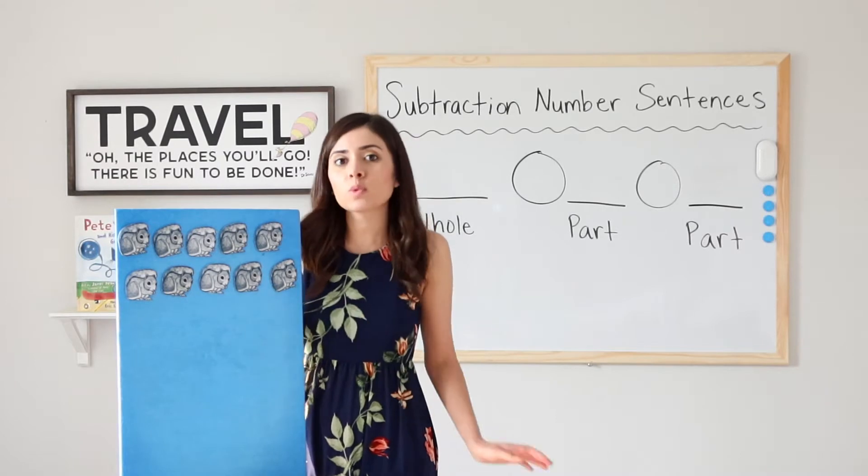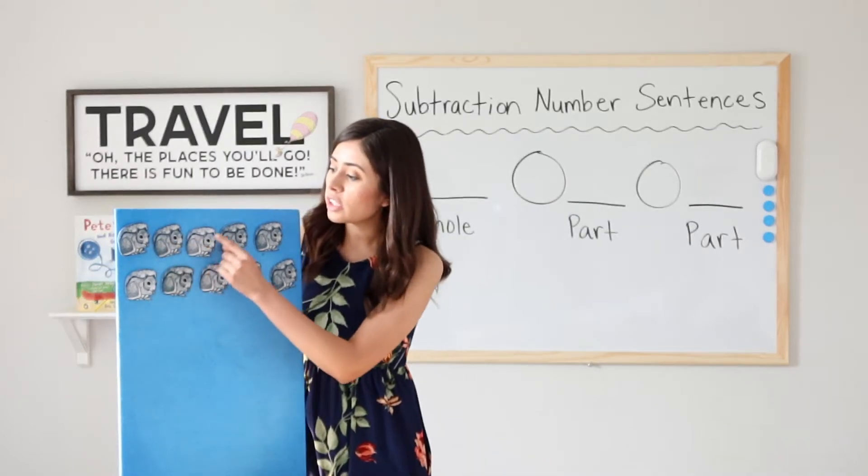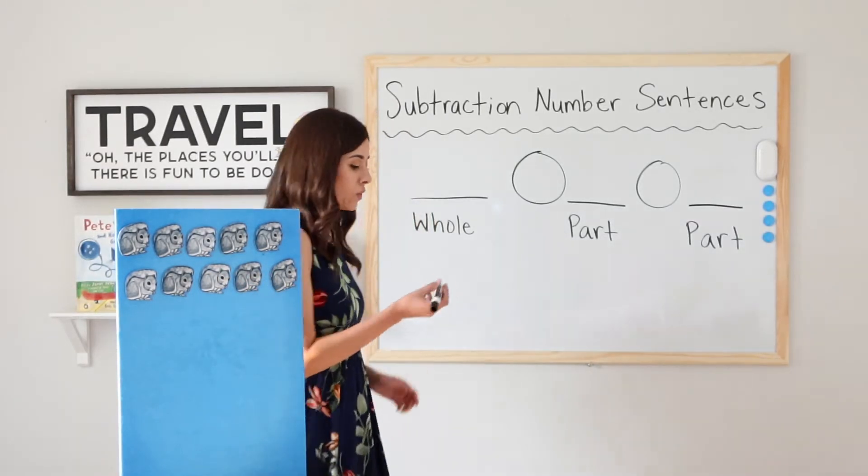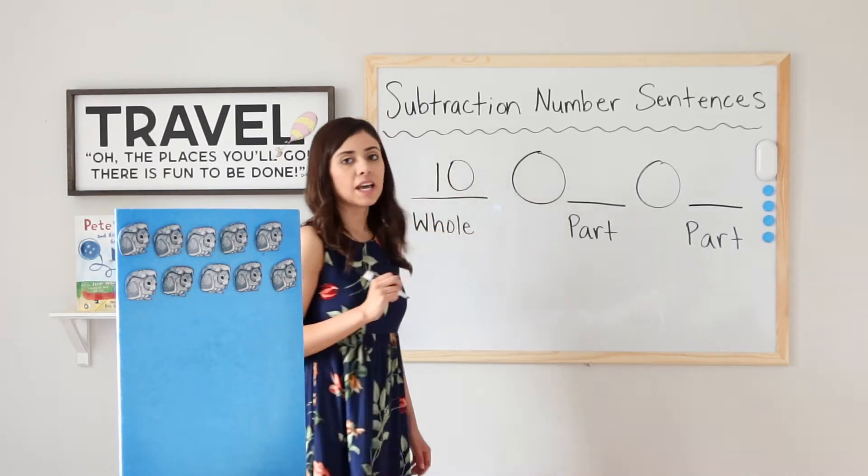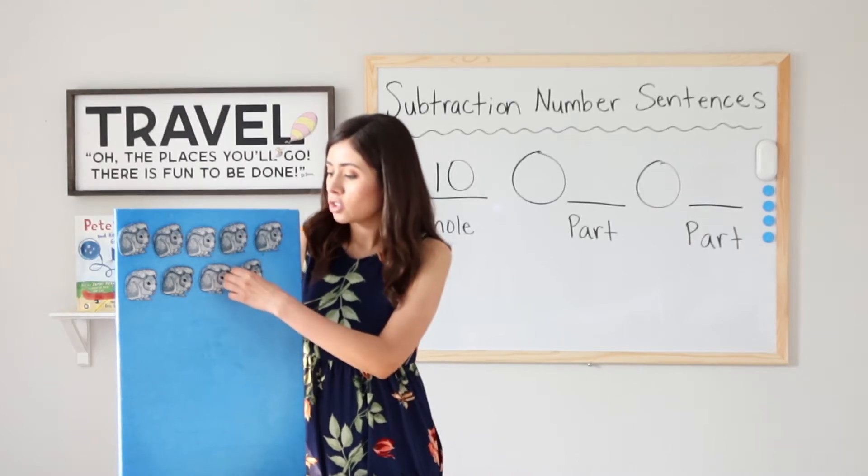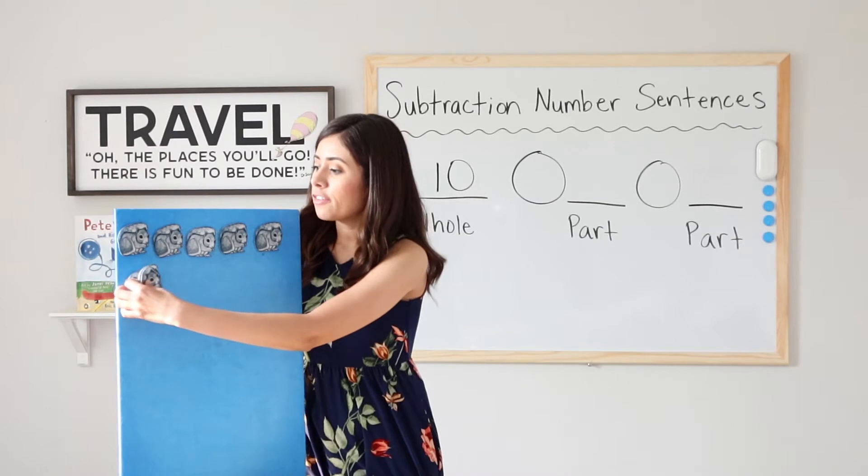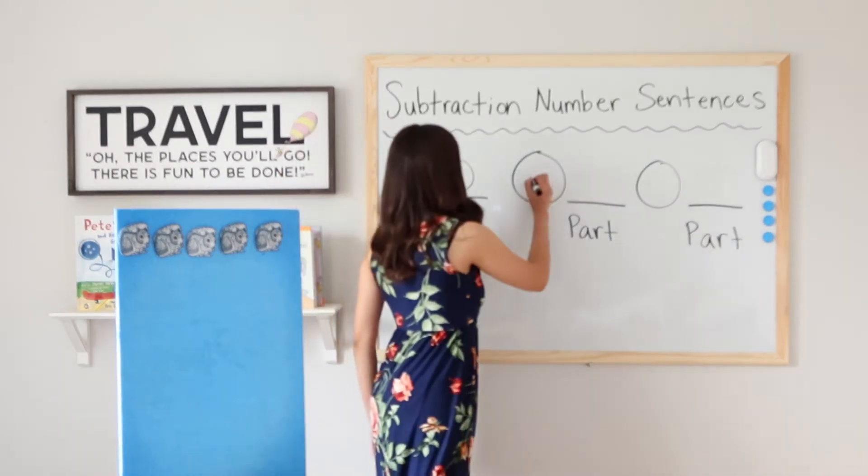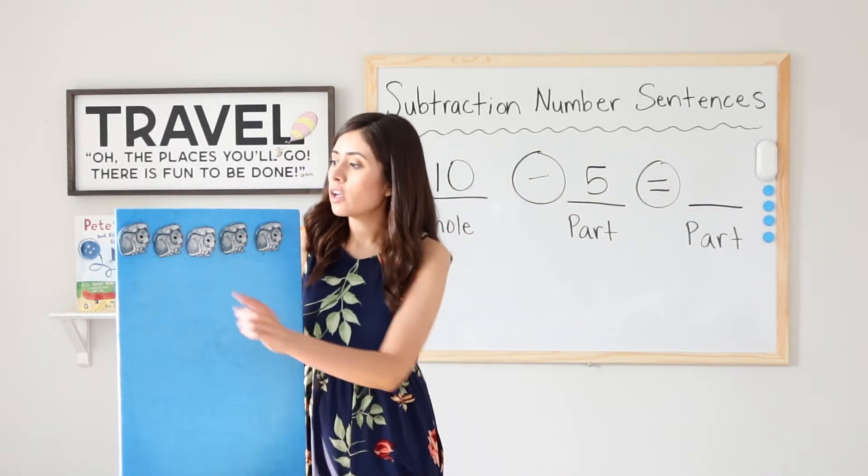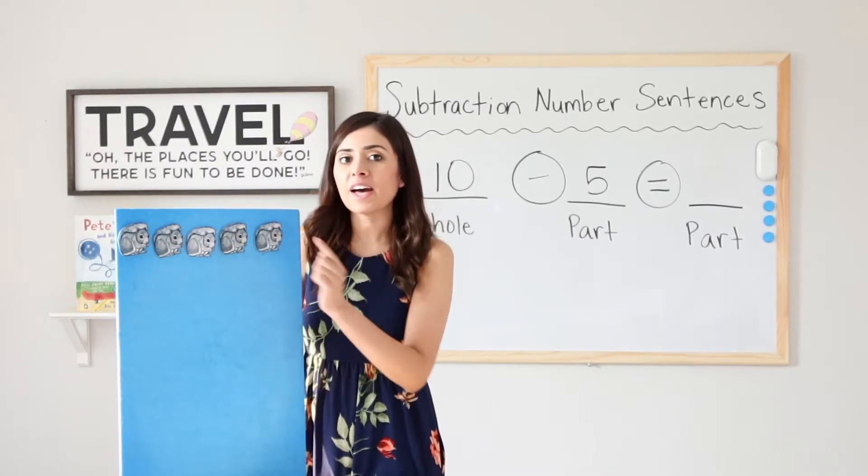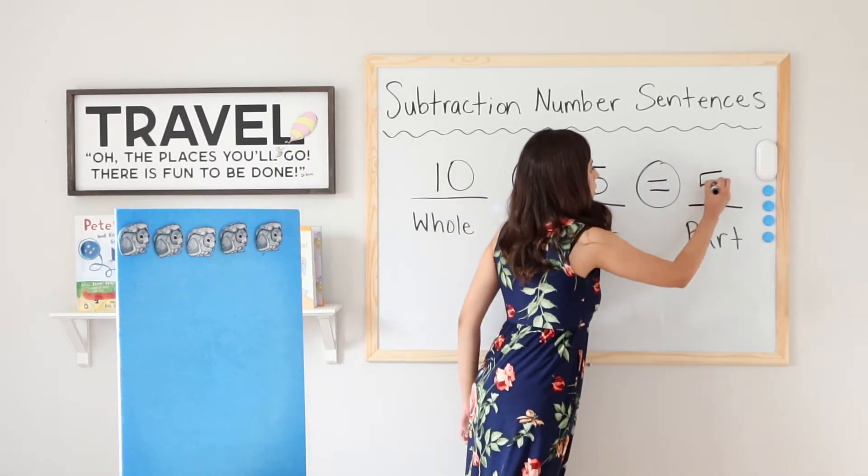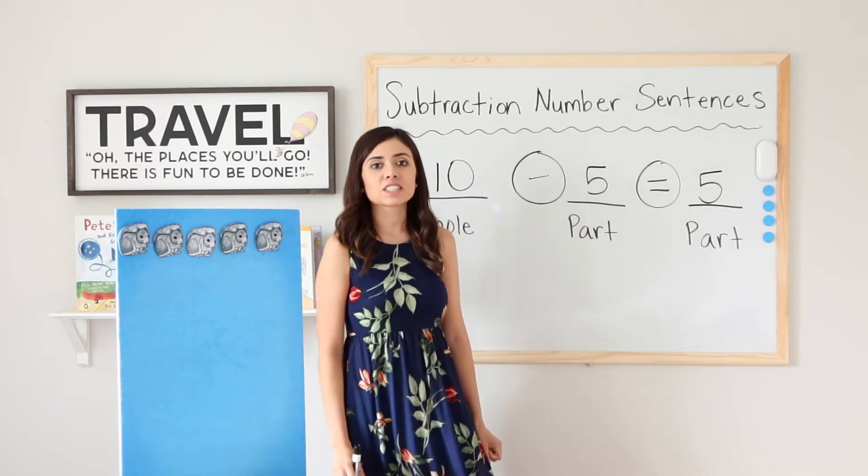So for this example, I have 10 squirrels playing at the park. 1, 2, 3, 4, 5, 6, 7, 8, 9, 10. Let's go ahead and write our whole down. 10. 5 decide it's time to go home, so we will take away 5. 1, 2, 3, 4, 5. So minus 5 equals what? How many squirrels do I have left? 1, 2, 3, 4, 5. So 10 minus 5 equals 5. 5 is my difference. Great job.